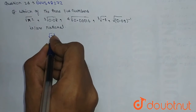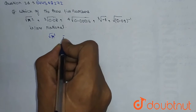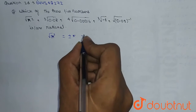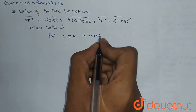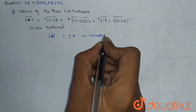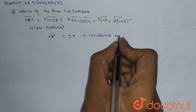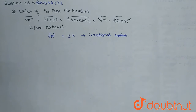When we solve this, we will get plus or minus pi. So this is an irrational number. The rational numbers are those numbers which can be written in the form of P by Q.